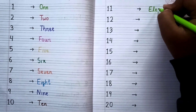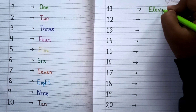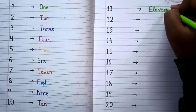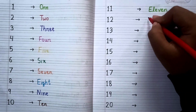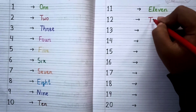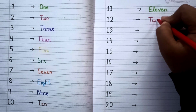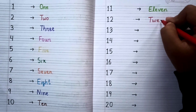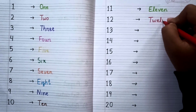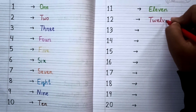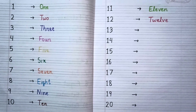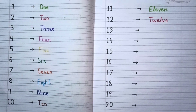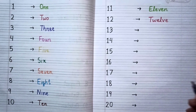After ten the next number is eleven. Remember the spelling: E-L-E-V-E-N, eleven. After eleven the next number is twelve, T-W-E-L-V-E, twelve.